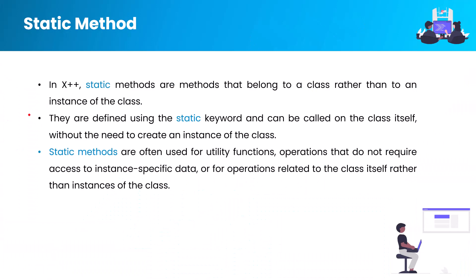As you can see in this slide, we have a few points and we'll try to understand them one by one. The first point is that in X++ programming language, static methods are methods that belong to the class rather than to an instance of the class. To access static methods, we don't need any instance of the class — we can directly call a static method via the class name.